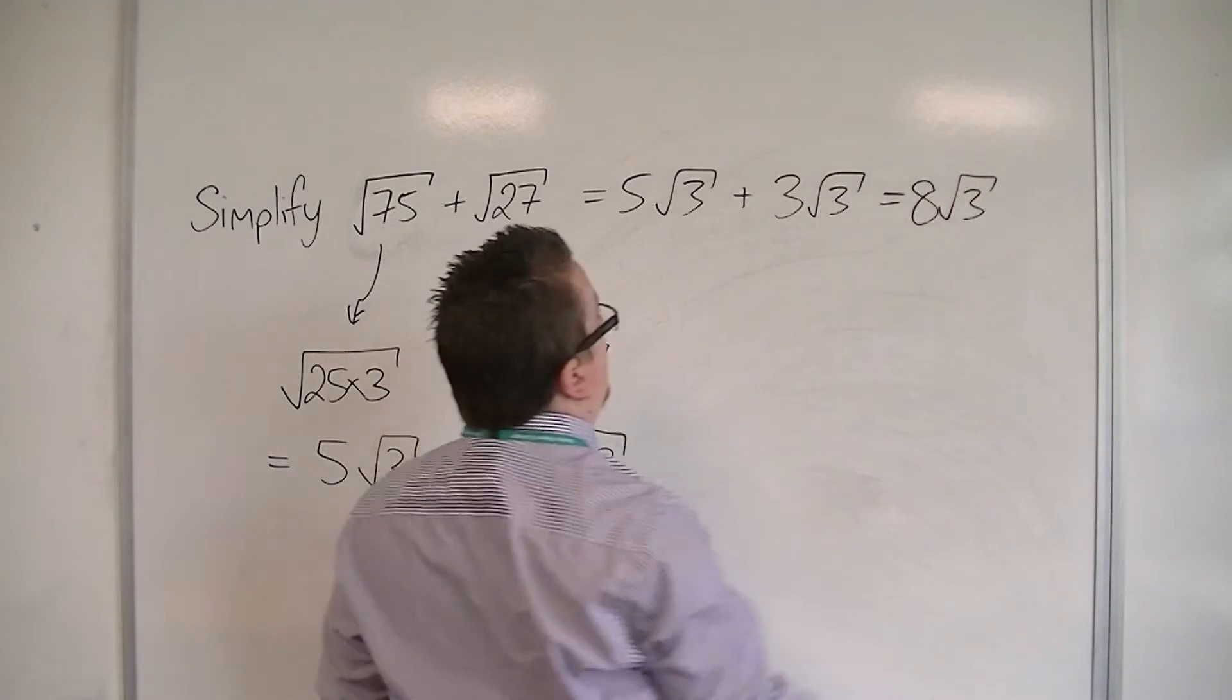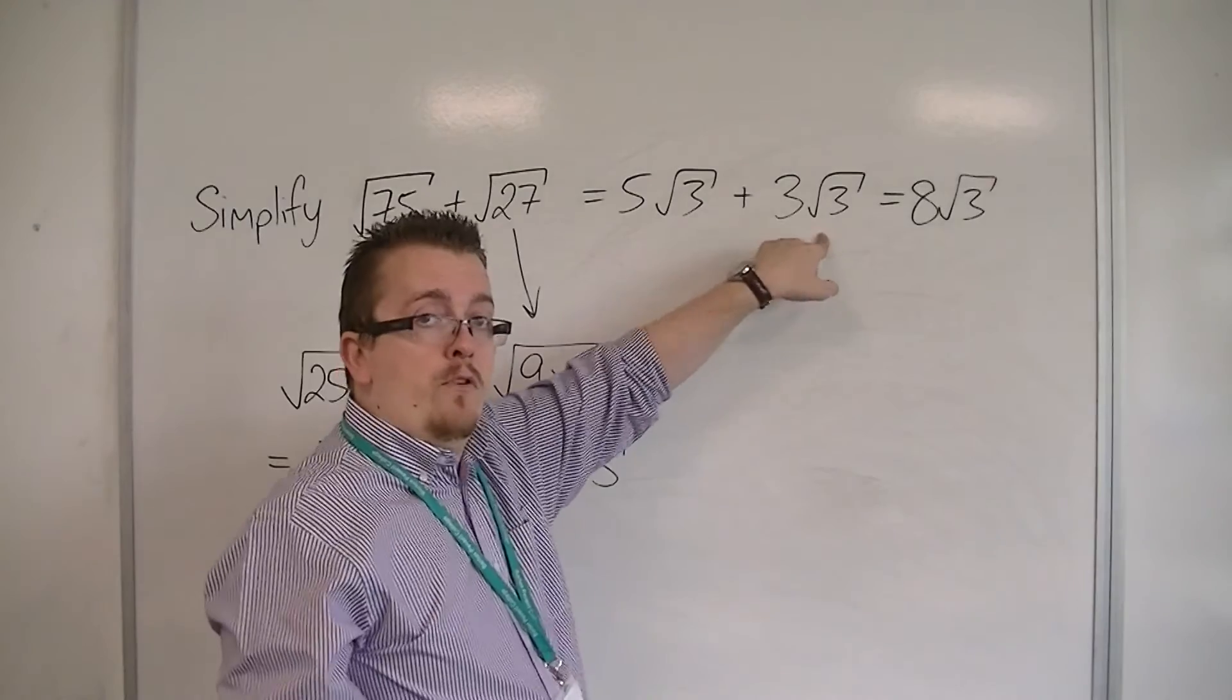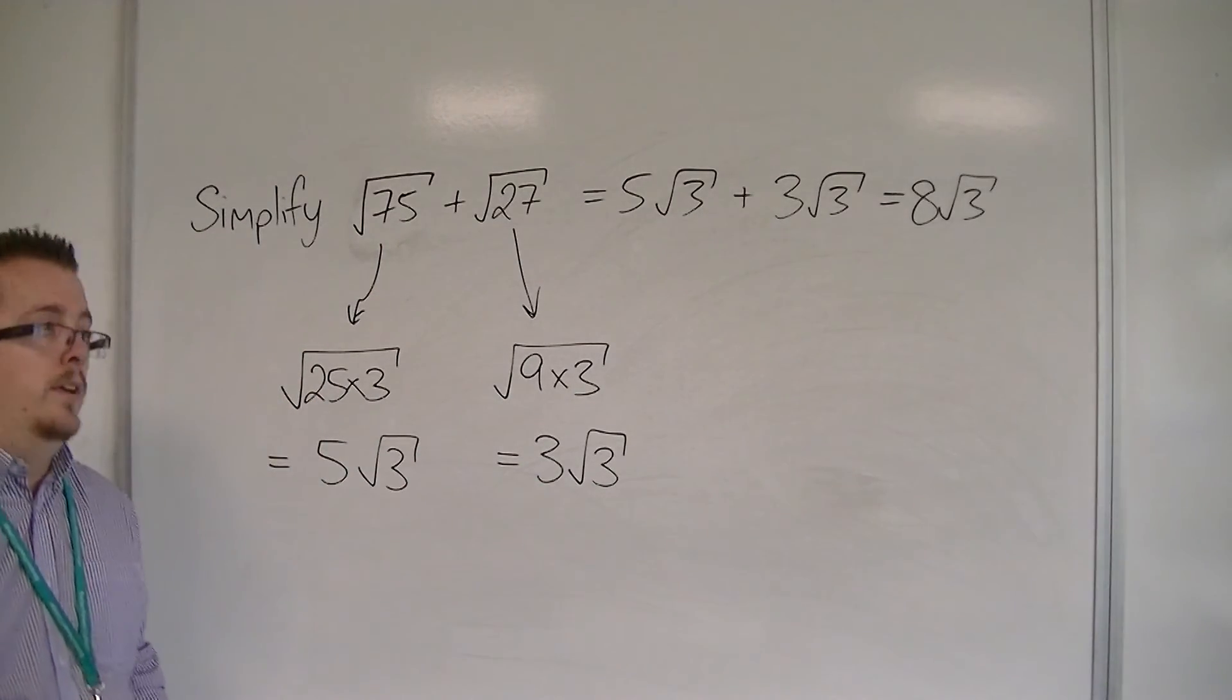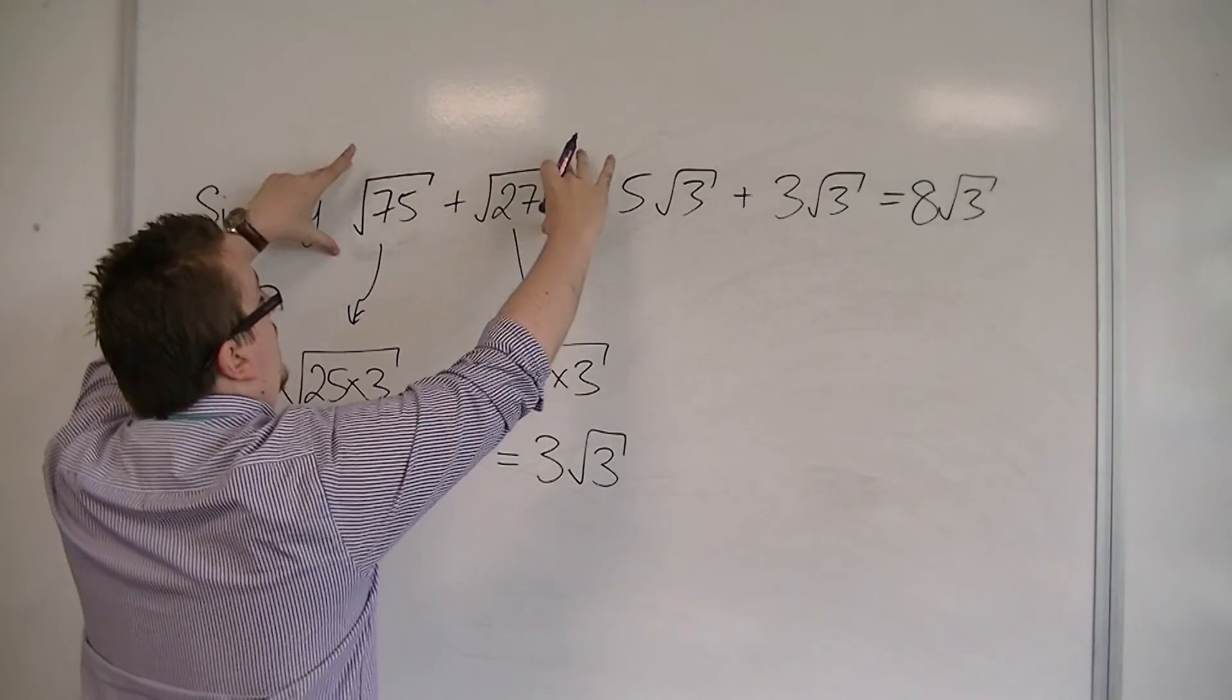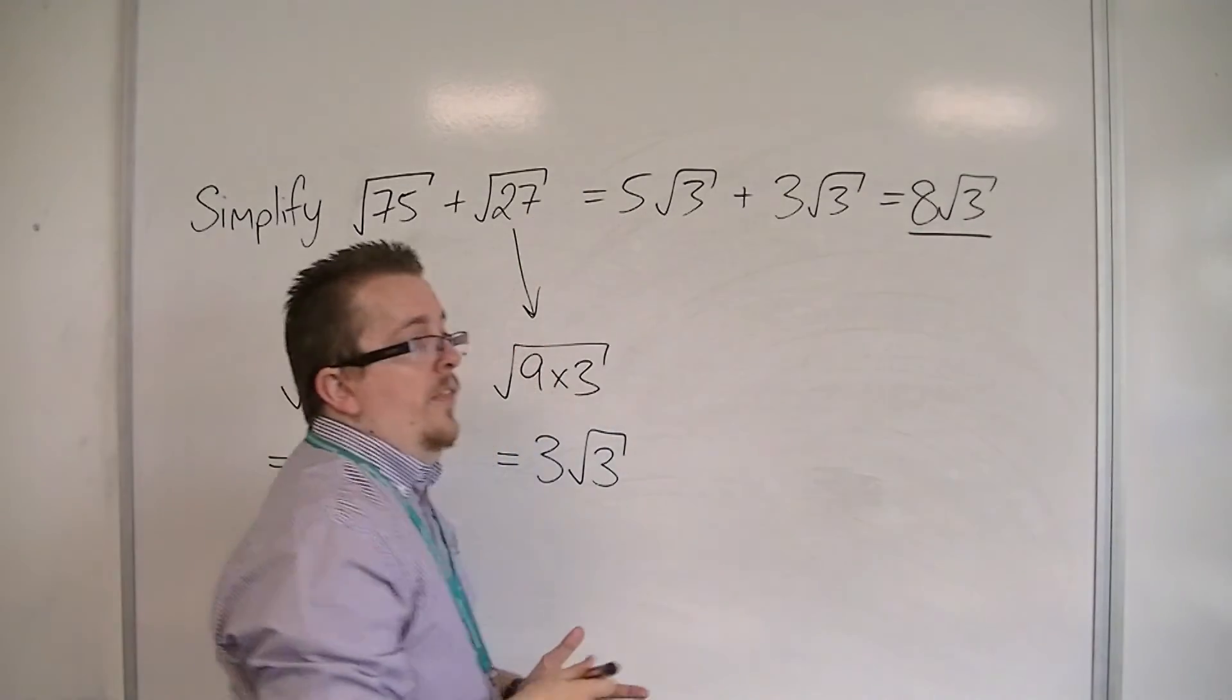Because effectively, what I'm saying is that I've got 5 root 3's here, I've got another 3 root 3's here, so together I must have 8 root 3's. And so that is how we can simplify something like this into a single element like that.